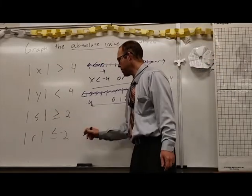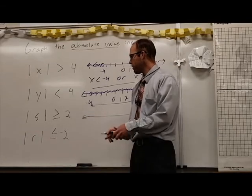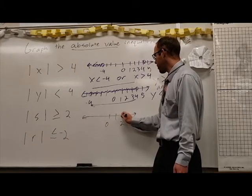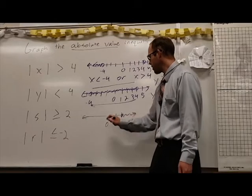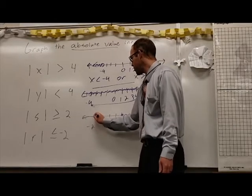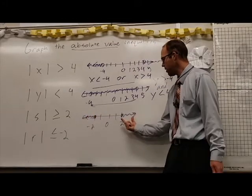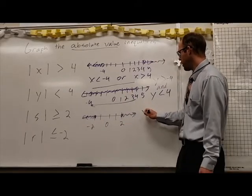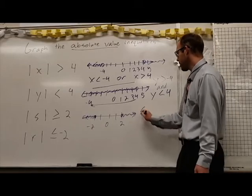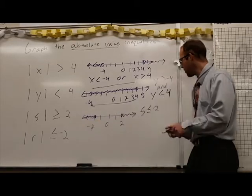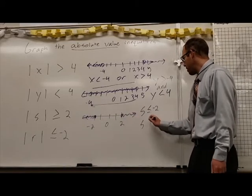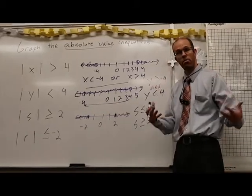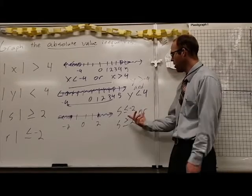Here our numbers need to be farther away than two, but they can also be equal to two. We count to two: farther away or equal to means shaded to the right. At negative two, that's two units away and shaded off to the left. So everything here is farther away than two or equal to two. S is less than or equal to negative two, and S is greater than or equal to positive two. The word that connects those two and keeps both of them is 'or'.